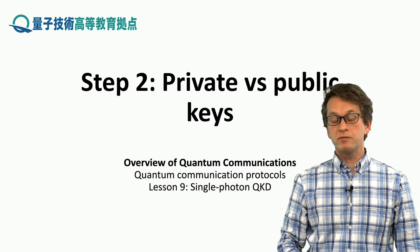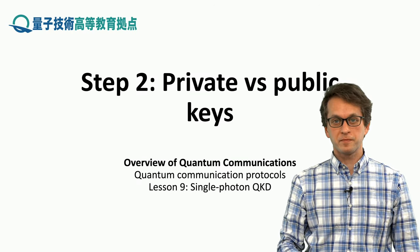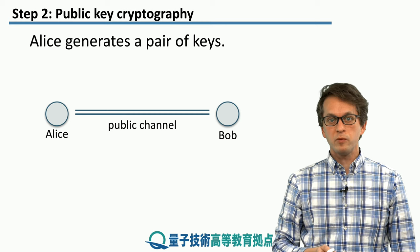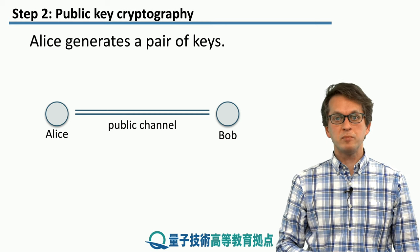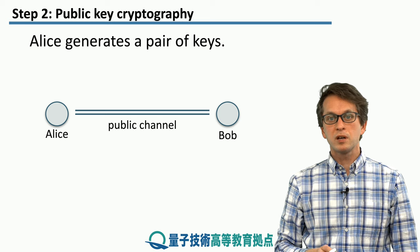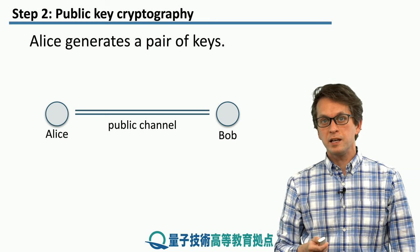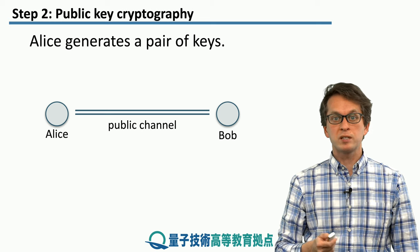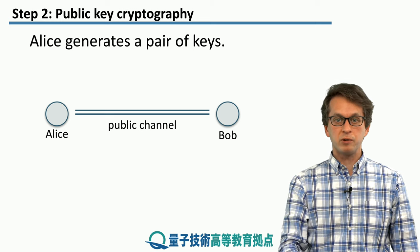Step 2: private versus public keys. One way to establish a private key between Alice and Bob is to use a public channel. Keys that are established in such a way are known as public keys. Here is how it works.